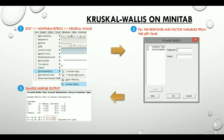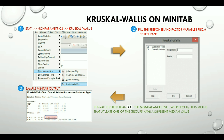Our primary focus here is on the p-value. If the p-value is less than alpha, the significance level, we reject the null hypothesis. This means that at least one of the groups has a different median value.